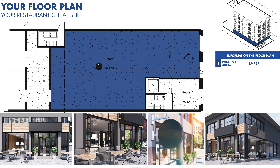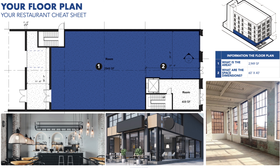First up on your checklist: calculate the total area of the space by multiplying its length and width. Let's say it's 2,949 square feet of prime real estate. This number is your north star, guiding you in conversations with the landlord and helping you sift through options like a pro. With your floor plan in hand, also make sure to highlight the dimensions of each room — don't just focus on the total area.